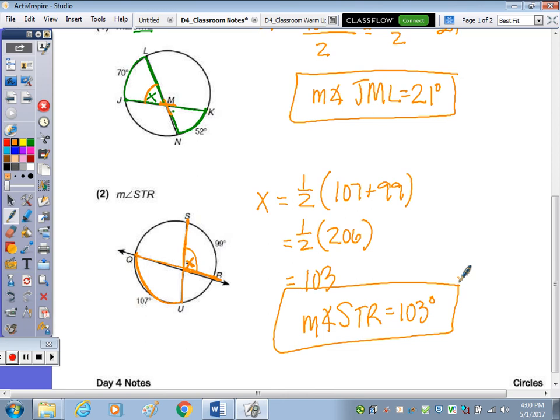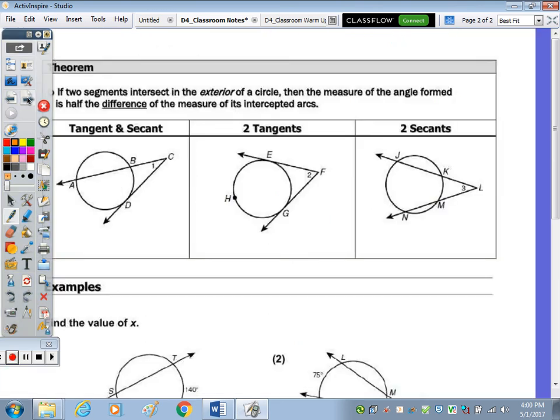On the back side, it says if the two segments intersect in the exterior of a circle, then the measure of the angle formed is half the difference of the measure of the arc. So if we follow the segments, here I have a secant as it touches the circle twice, and here's a tangent, and they intersect here at C. C is outside the circle. Tracing along this tangent as it touches the circle once, that intersects this tangent at F, which is outside the circle.